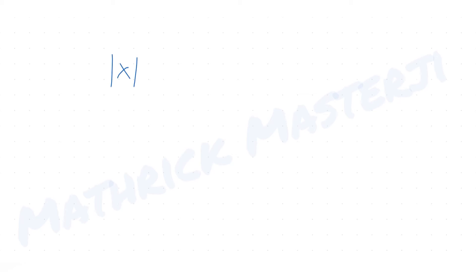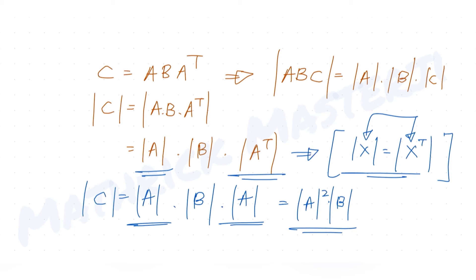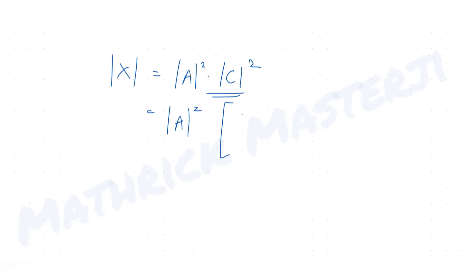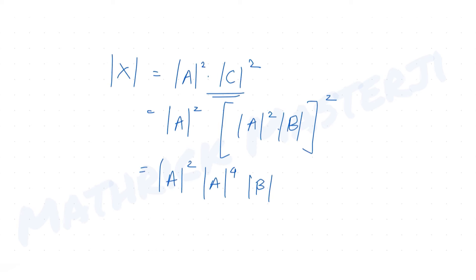So det(X) = det(A)² · det(C)². Now substituting det(C) = det(A)² · det(B), we get det(X) = det(A)² · (det(A)² · det(B))², which expands to det(A)² · det(A)⁴ · det(B)², giving det(A)⁶ · det(B)².